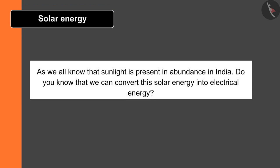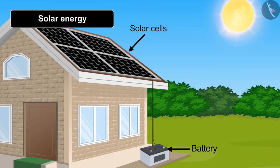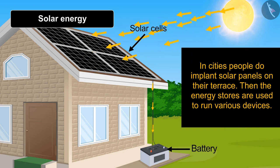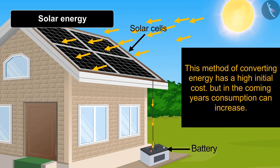As we all know, sunlight is present in abundance in India. We can convert solar energy into electrical energy. To convert this energy, solar cells of silicon are kept in the sunlight. These cells help in collecting the energy and storing it in a battery, which can be used later. In cities, people install solar panels on their terraces and the stored energy is used to run various devices.